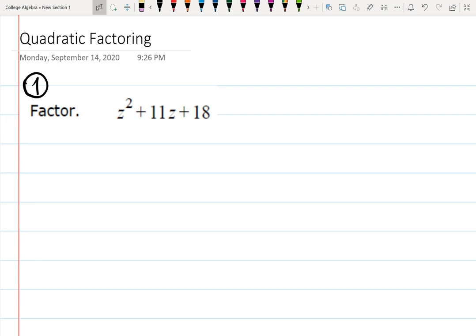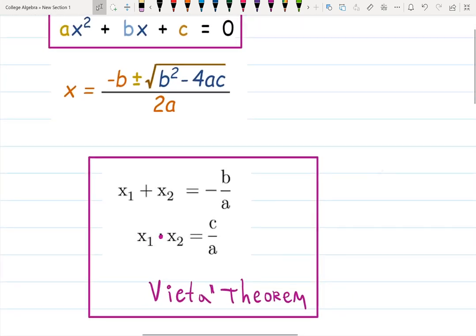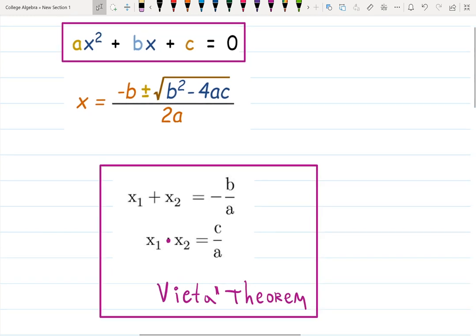So for the first example, z squared plus 11z plus 18, I'm going to use Vieta's theorem, which looks like this. And many of you actually might have seen it before. The Vieta theorem says when you work with quadratic equations, here they are, ax squared plus bx plus c equals 0.